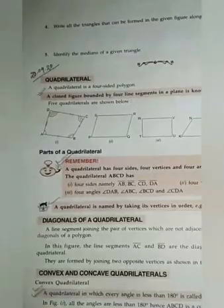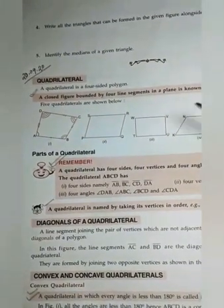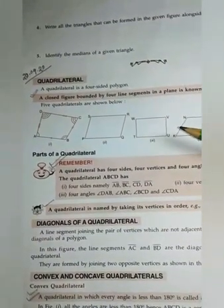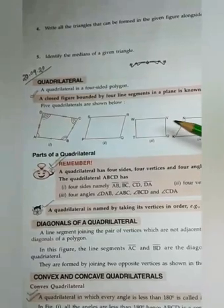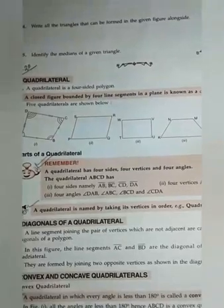Hello children. Today we will learn about quadrilaterals. Open your book page number 94. A closed figure bounded by four line segments in a plane is known as a quadrilateral.